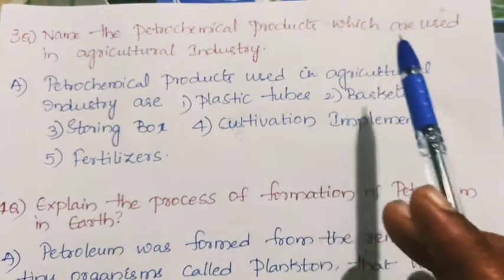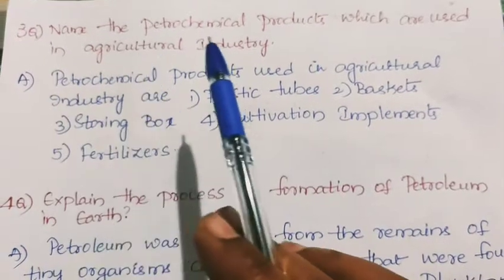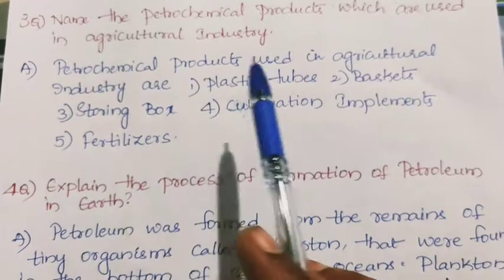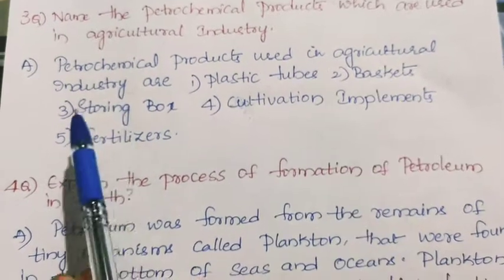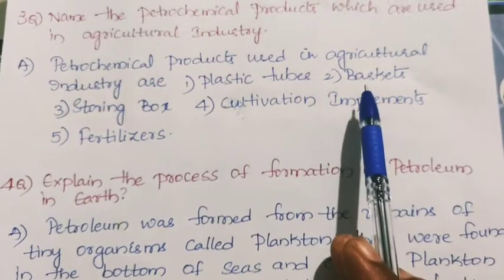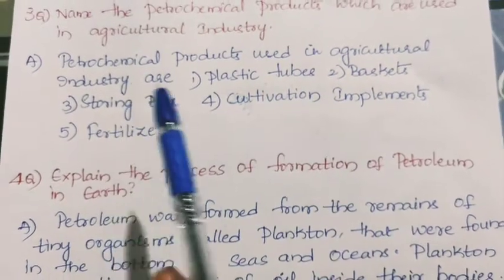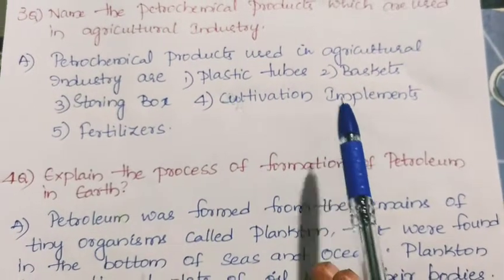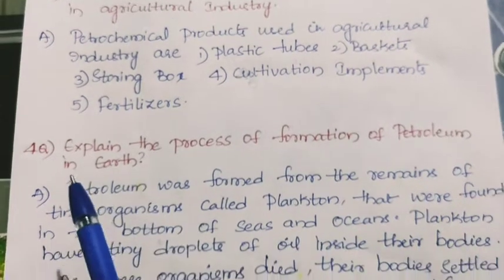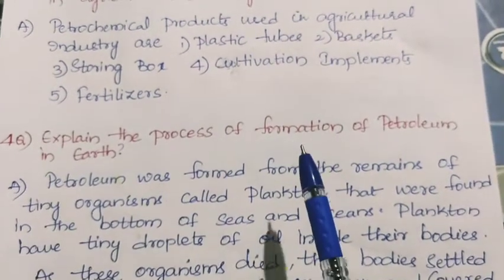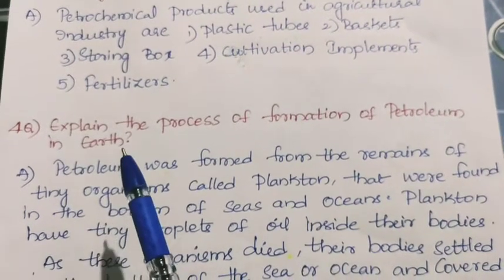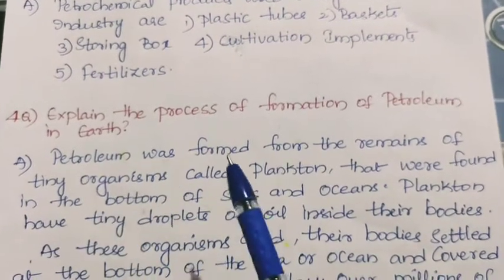Third question: name the petrochemical products used in agricultural industry. Petrochemical products used in agricultural industry are plastic tubes, baskets, storing boxes, cultivation implements, and fertilizers.